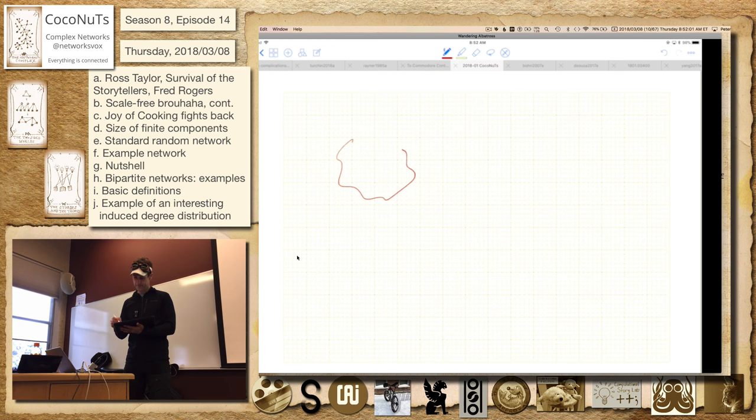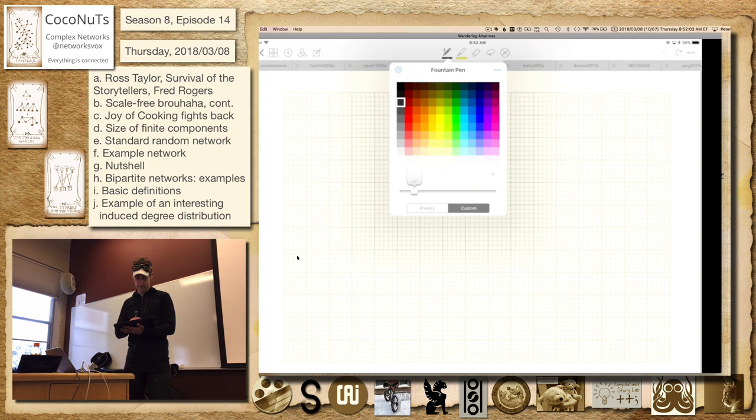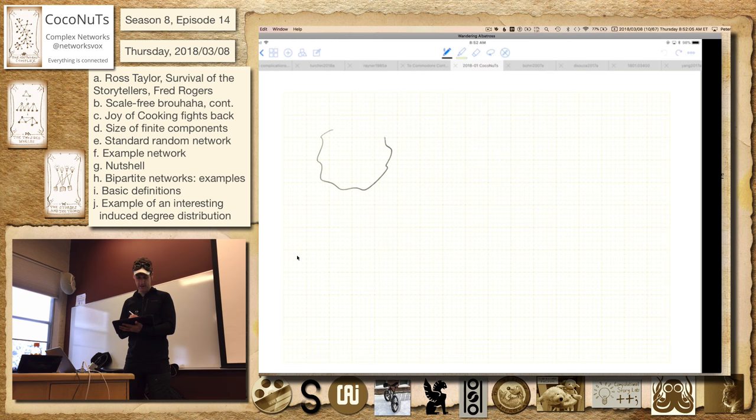We've got some network here, and this is some giant component. We've got all these little pieces—boom, boom, boom. So this is the giant component if it exists, for example. And then this thing that I'm going to say, average n equals the average size of the finite components. So that's an important word here: finite components.